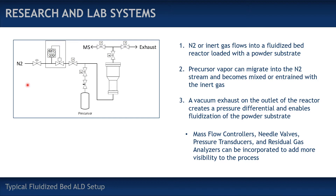Most of the research systems at Forge Nano use a fluidized bed reactor setup to perform ALD. The general premise is that you take N2 or an inert gas, flow it through a manifold at a fixed speed, and it enters a reactor housing your powdered materials. Those materials begin to fluidize — becoming suspended within the traveling N2 gas. You can then release vapor from your precursor into the same manifold, which becomes entrained within the N2 and makes its way to the particles to begin the ALD reaction.